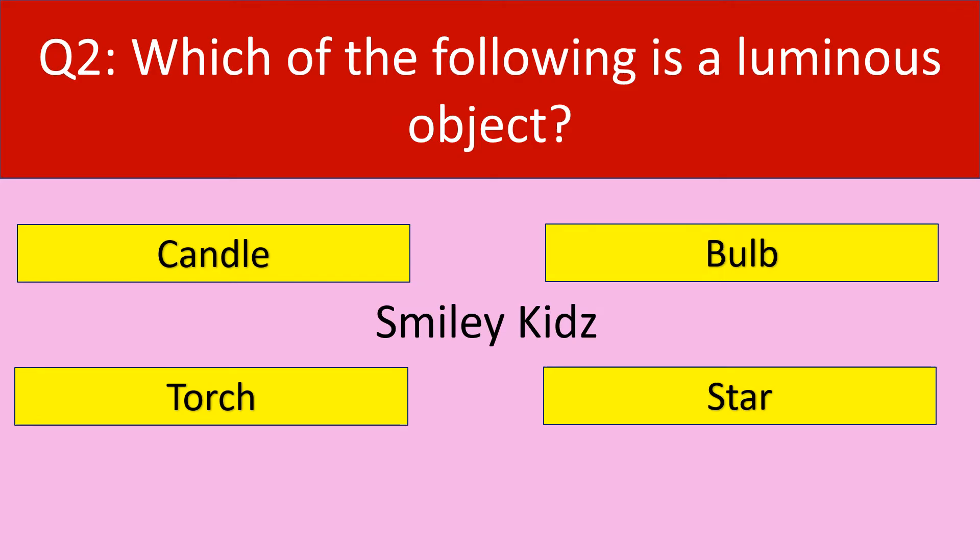Moving to question number 2. Which of the following is a luminous object? Your options are: Candle, Bulb, Torch, Star.